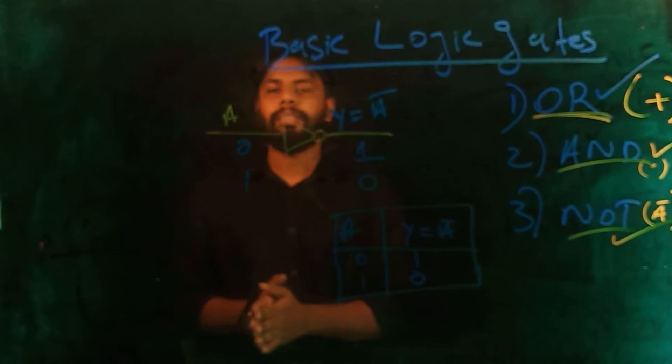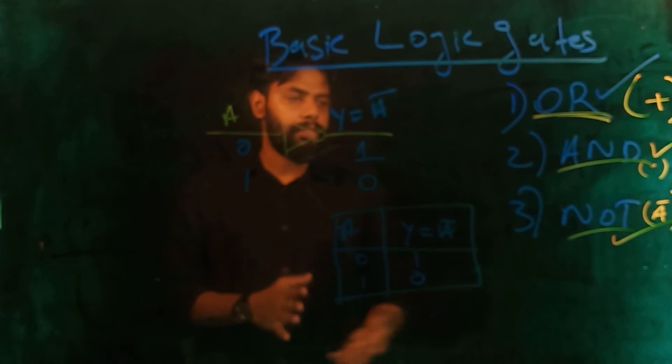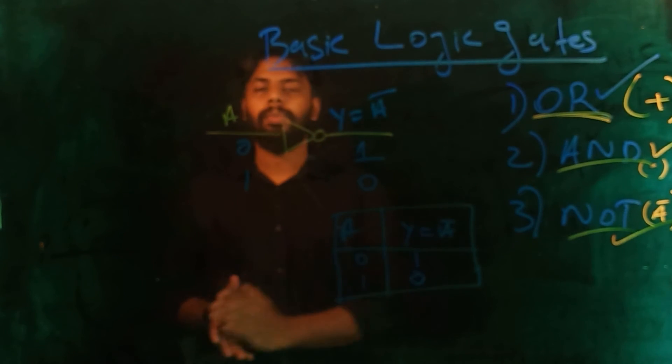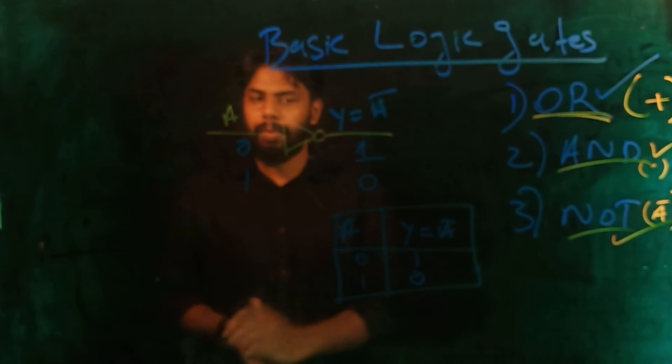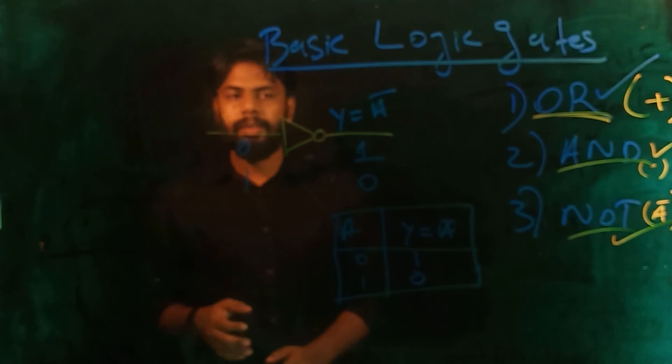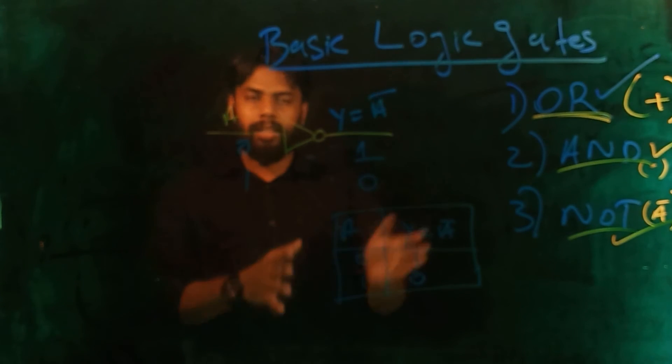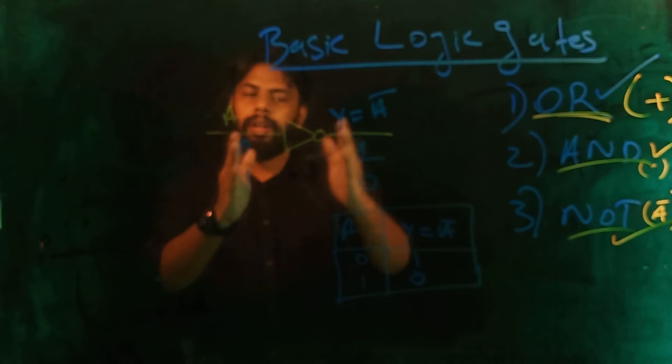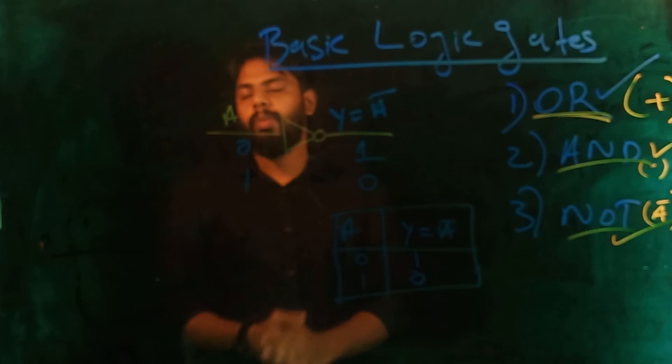AND operation is the multiplication and NOT operation is the negation operation. This is the diagram for each gate.